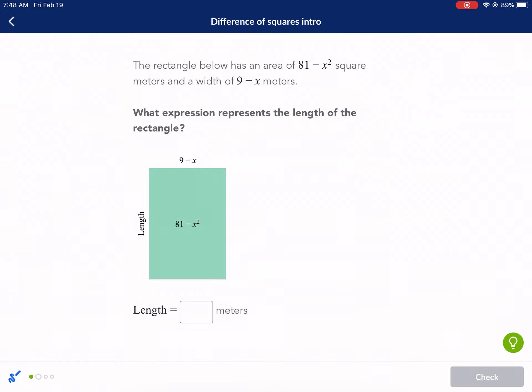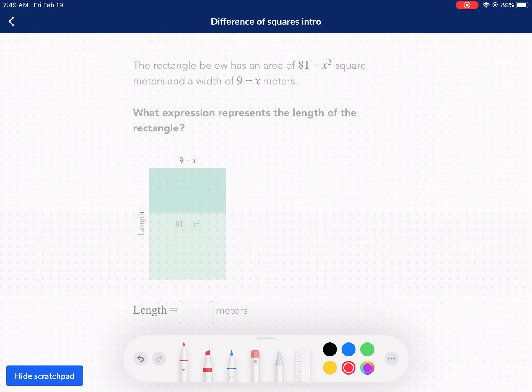The rectangle below has an area of 81 minus x squared meters and a width of nine minus x meters. What expression represents the length of the rectangle? Essentially, we're trying to find the product of two things that equals 81 minus x squared. We already know one of them is nine minus x. So what we can do here is just apply what we learned in the previous page, the previous problem.